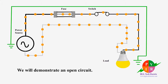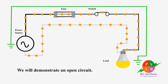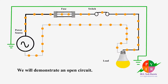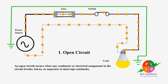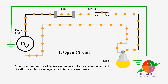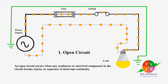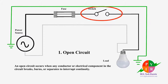In this circuit we are going to demonstrate different ways that an open circuit can occur. An open circuit occurs when any conductor or electrical component in the circuit breaks, burns, or separates to interrupt continuity.